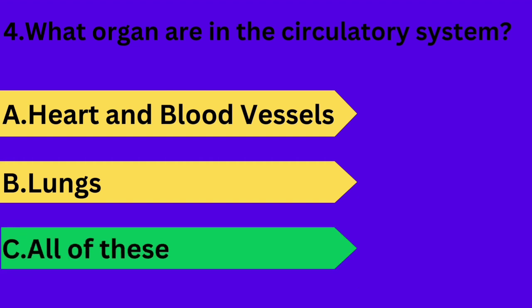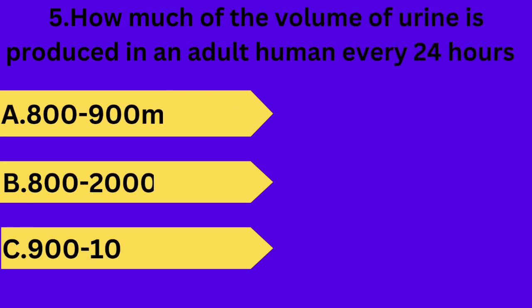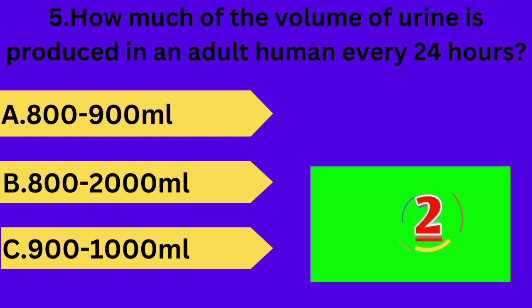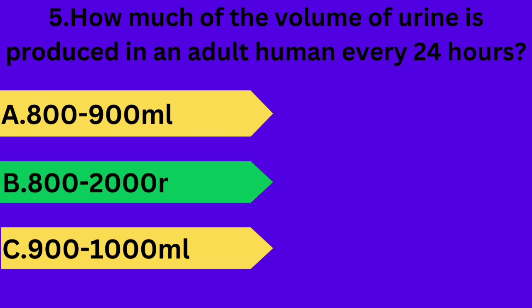And next question is: how much volume of urine is produced in an adult human every 24 hours? Option A: 800 to 900 ml. Option B: 800 to 2000 ml. Option C: 900 to 1000 ml. Your time starts now. Answer is option B: 800 to 2000 ml.